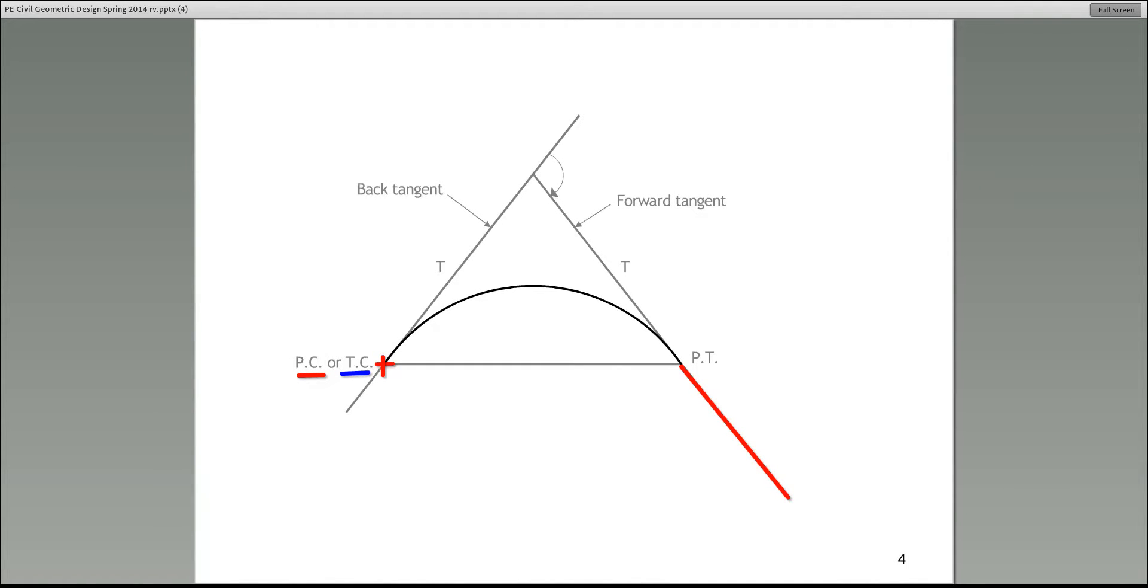Now, what about the point where the curve ends and the next alignment begins? What you see on the right hand side, that is called PT. PT stands for point of tangency. This highlighted blue line is the distance we call back tangent. And then the next alignment, the next blue line you see is the forward tangent.